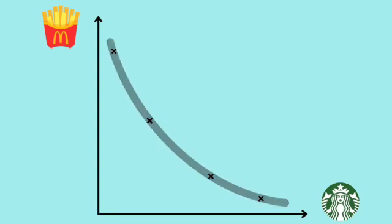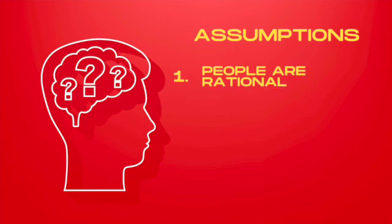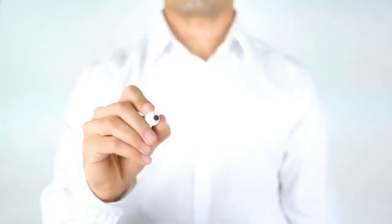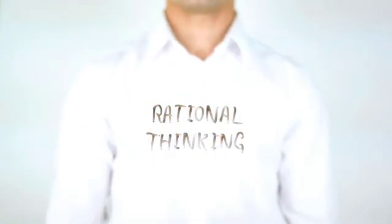We have now built our indifference curve and have noted some of its key characteristics. Let's now look at a number of assumptions that economists make when using indifference curves. Firstly, they assume that people are rational and will always choose to maximize their own pleasure or utility.